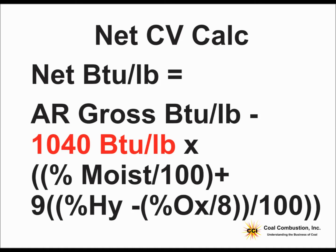The percent moisture in this example will be 30%, which is the total as-received moisture in the coal. The nine is a factor that we have to multiply the hydrogen by, because the water formed from the combustion of hydrogen weighs nine times more than the hydrogen. We're using the percent as-received hydrogen number, but we also have to subtract a correction factor — the percent oxygen as-received divided by eight — to represent hydrogen that's already bound to oxygen in the coal and is not available to be burned.